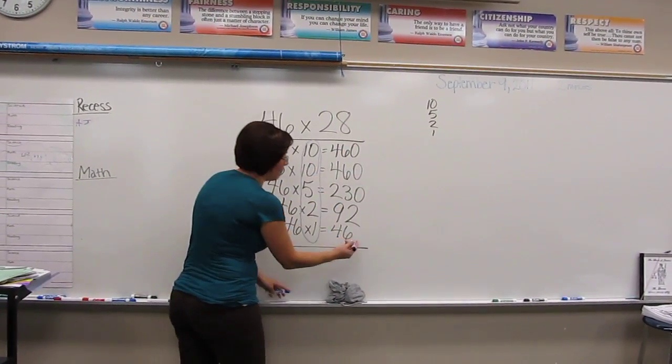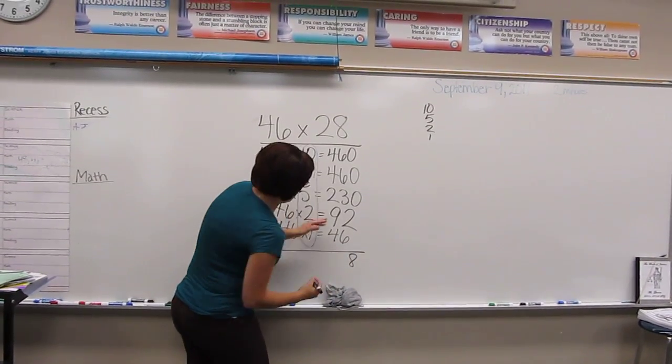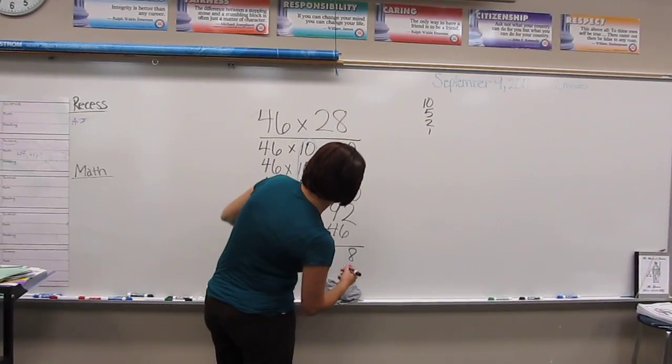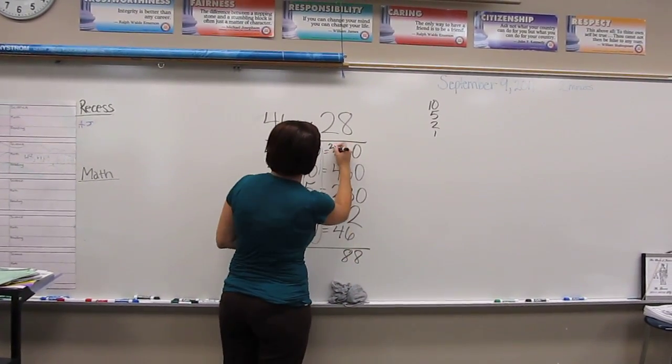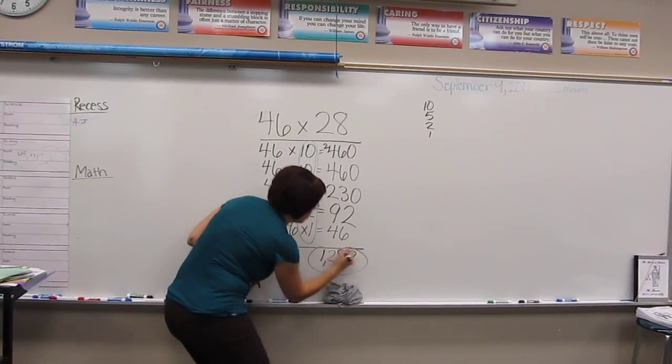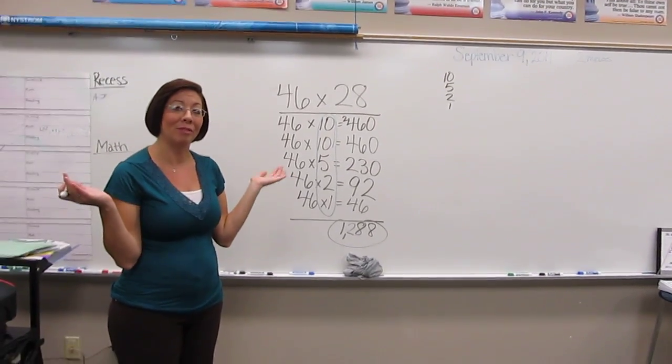Now all I need to do is add up this line. I probably should have done a better job of lining this up. 1,288 is my answer. And that's how we multiply in fifth grade.